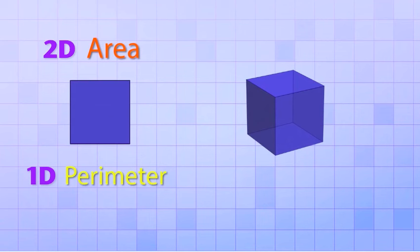You might remember from our previous videos that 2-D shapes have both a 2-D quantity called area and a 1-D quantity called perimeter. Well, in a similar way, 3-D objects have both a 3-D quantity called volume and a 2-D quantity called surface area.